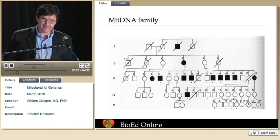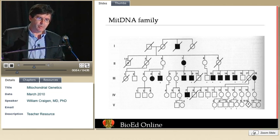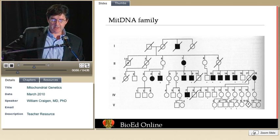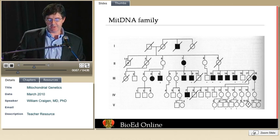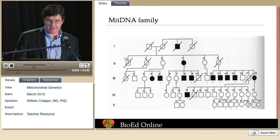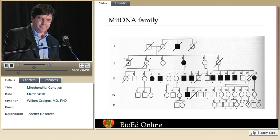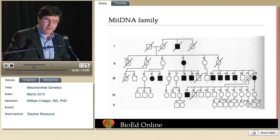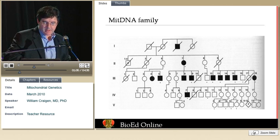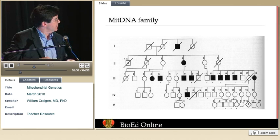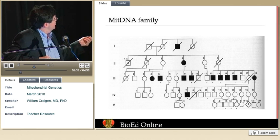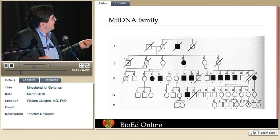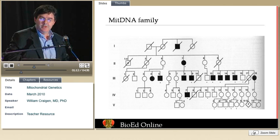This would be a family where we would suspect a mitochondrial DNA change. Circles are females and squares are males, and a line through them means the person has passed. Dark boxes indicate that the individual is affected with the condition.